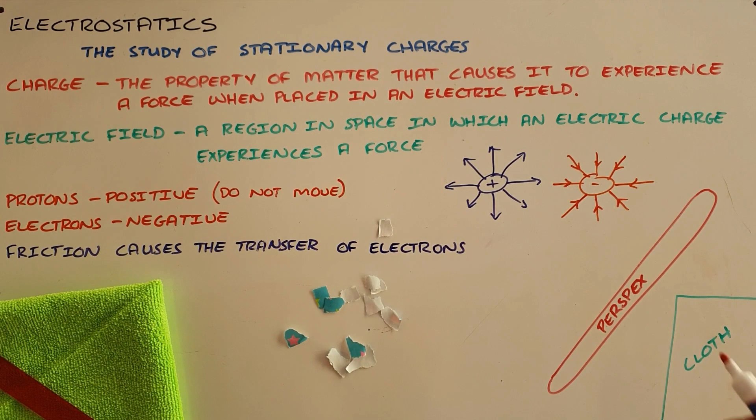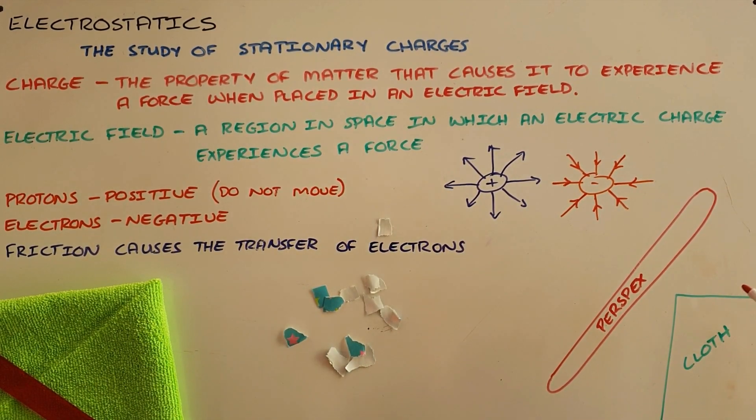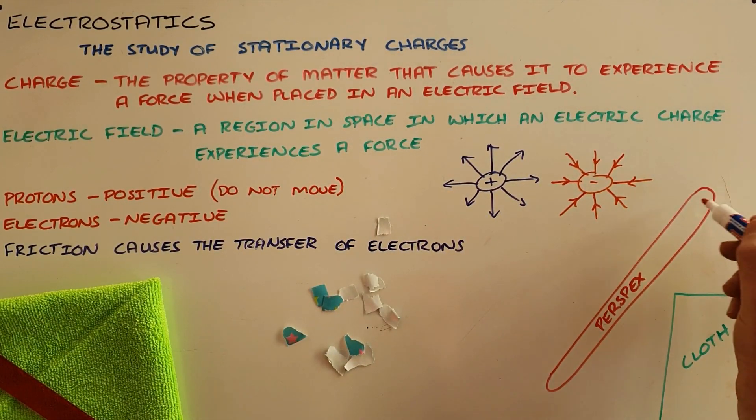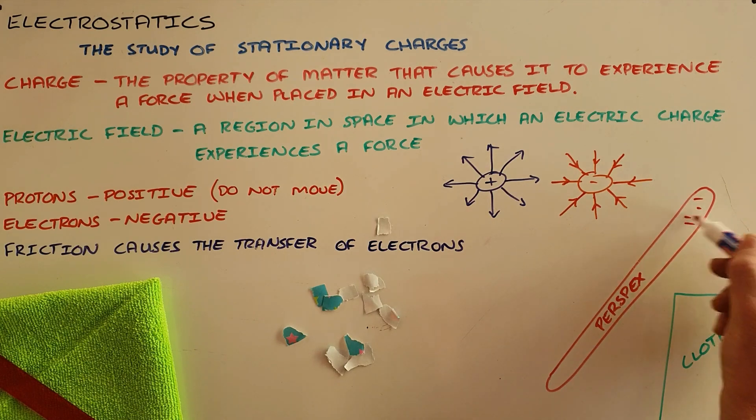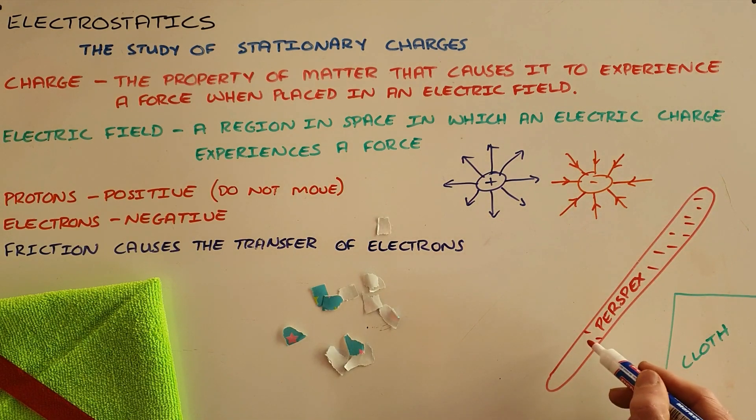So what we have shown here is that through the friction between the perspex and the cloth, we have built up an excess of electrons that have been transferred from the cloth onto the perspex, which makes this perspex negatively charged. It also makes the cloth slightly more positively charged.